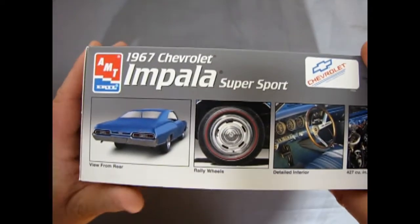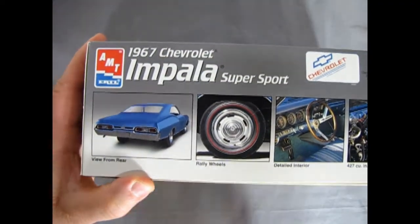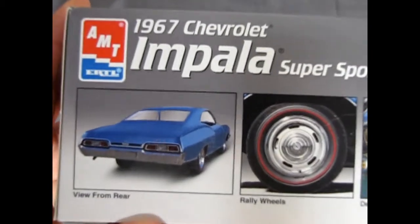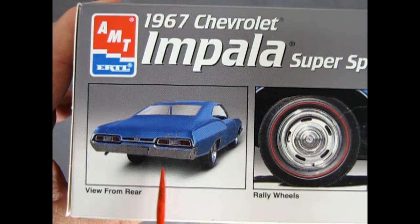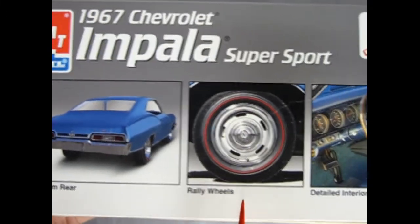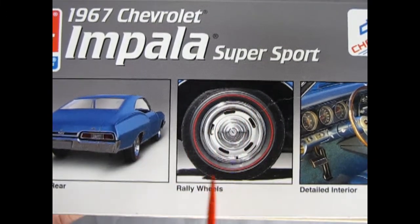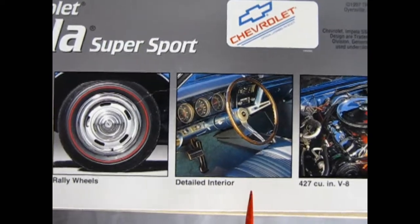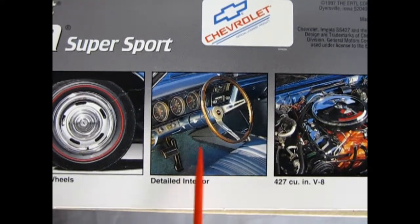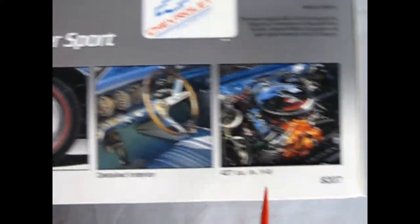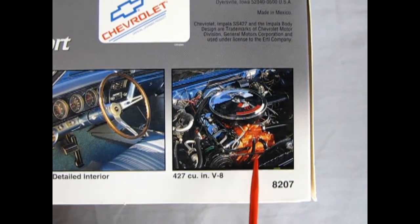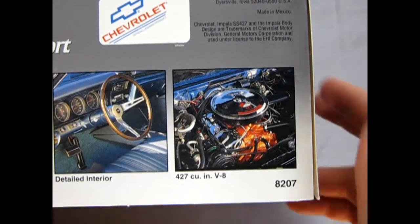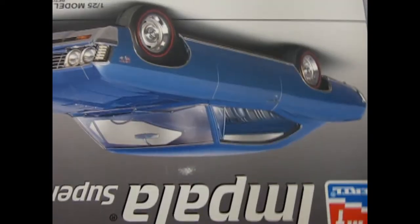And then here we actually get some real pictures of the real car. So just bring this up again. There's the view from the rear, the rally wheels with the red line tires in there, red wall tires I guess, the detailed interior, and the real 427 cubic inch V8 molded or painted in Chevrolet engine red or orange.